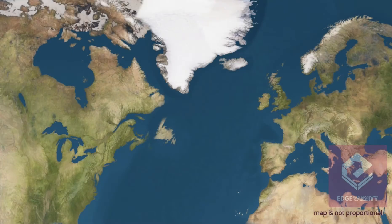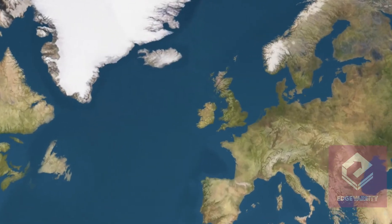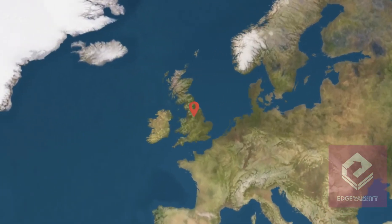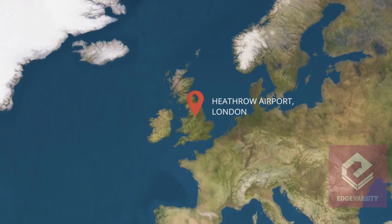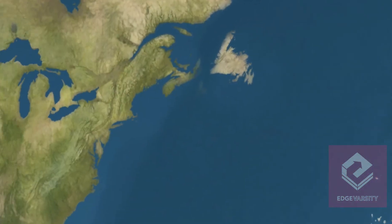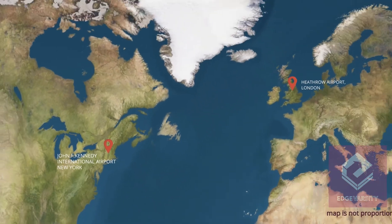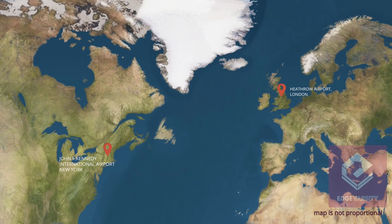Say a civil aircraft needs to travel from Heathrow Airport London to John F. Kennedy International Airport New York. Ideally, one would wish to fly from LHR to JFK on a direct path for reasons like shorter flight time and saving fuel.